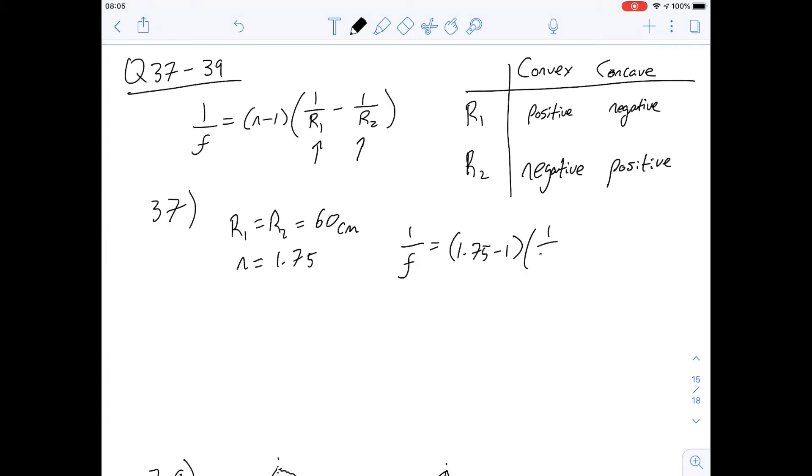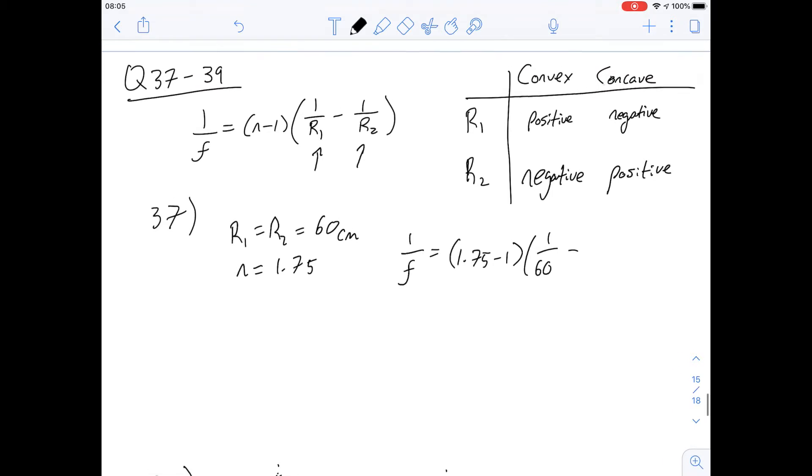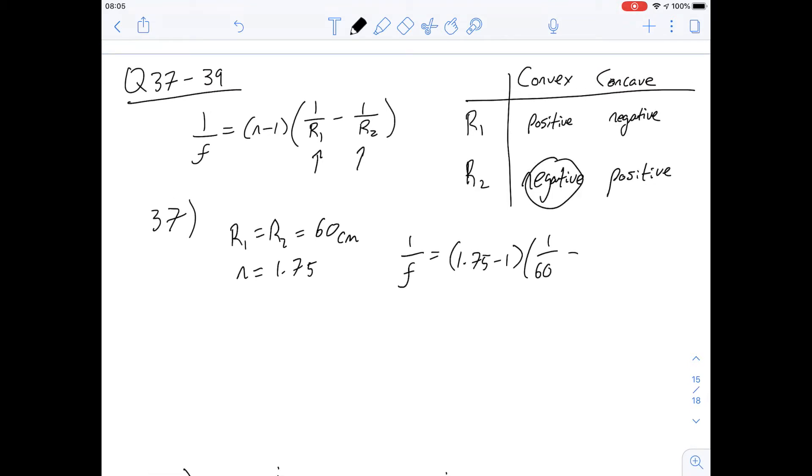It's 1.75 minus 1 upon 1 over 60 minus, and of course, because we're dealing with a convex lens, R2 is going to be negative here. And so we can say it's minus minus 1 over 60, or we can simplify that a little bit and just make that a plus.